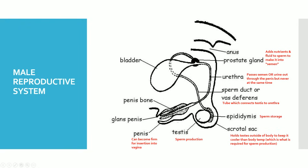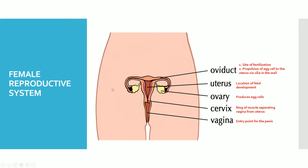The urethra connects to the penis, which is a structure that can become firm and insert itself into the vagina. Looking at the female reproductive system, we've got the vagina as the entry point, and the vagina is separated from the uterus by something called the cervix, which is basically a ring of muscle. The uterus is where fetal development happens. There are two ovaries per female reproductive system.